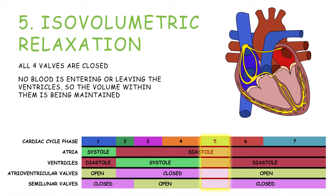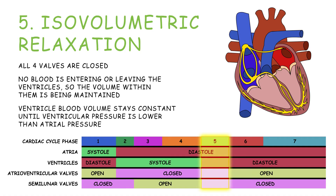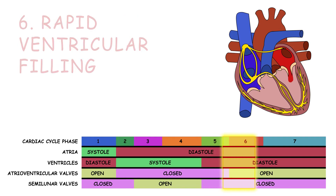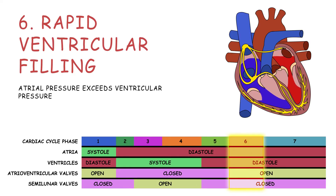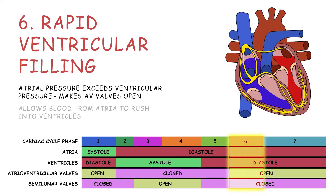The fifth phase: blood volume in the ventricles stays the same until ventricular pressure is lower than atrial pressure. Then we have phase 6, rapid ventricular filling. Atrial pressure exceeding ventricular pressure makes the atrioventricular valves open, allowing blood from the atria to rush into the ventricles.